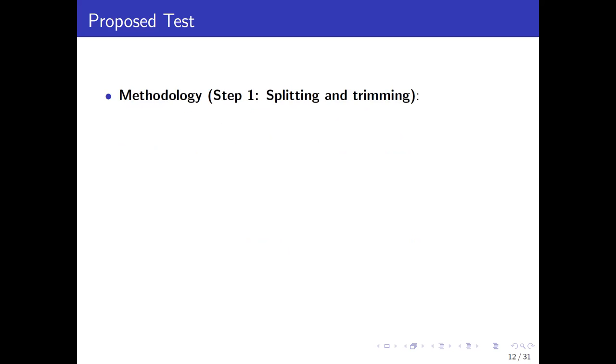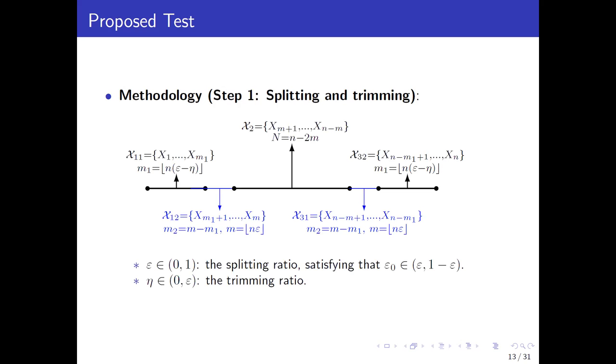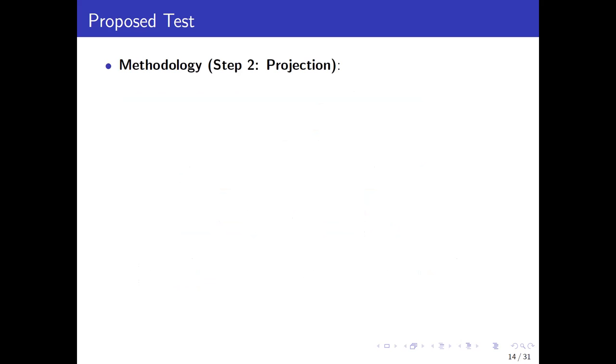Our methodology includes two steps. The first step is splitting and trimming. We split the original multivariate data into several blocks. The size of each block is determined jointly by a splitting ratio epsilon and the trimming ratio eta. The largest block is x2, which is the one in the middle. The elements in this block will be used in the next step. The two parts on the left and right to x2 will further divide into two pieces. We need to adopt the technique of trimming to accommodate the underlying temporal dependence in the data. These two blocks marked in blue will be excluded from the next step.